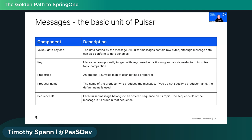Properties are a key-value map that travel with the message without changing the payload — useful for auditing or passing metadata between consumers in a pipeline. Always give a producer a name; if you don't, Pulsar generates one, making tracking harder. The sequence ID is assigned by Pulsar and tells you the order of messages, enabling ordered and exactly-once delivery.